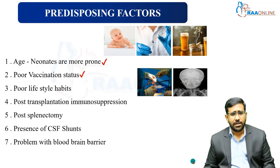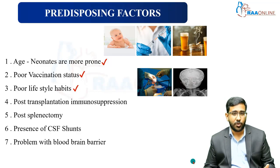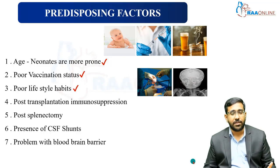The third predisposing factor is poor lifestyle. The patient could be an alcoholic or a smoker. Exposure to cigarette smoking hampers both humoral immunity and cell-mediated immune response. Any such lifestyle habit puts us at high risk of invasive infection like meningitis.